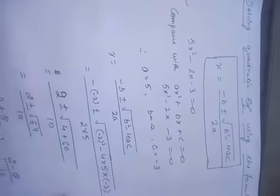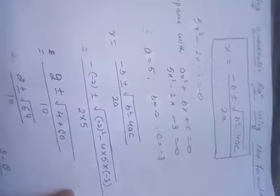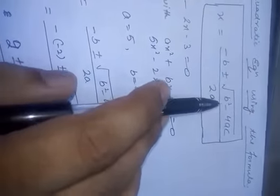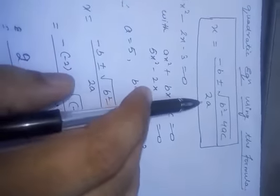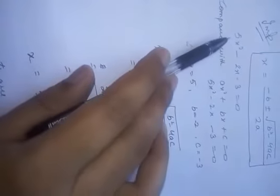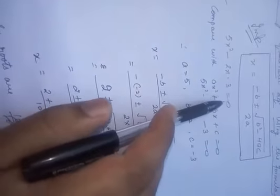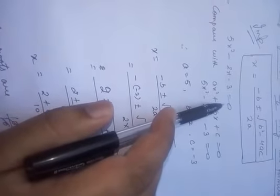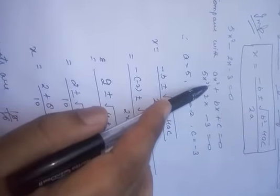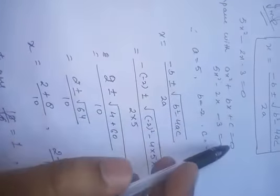The most important next topic in this chapter is solving the quadratic equation by the formula. The formula is: x = [-b ± √(b² - 4ac)] / 2a. This is the most important formula for the board exam. For example, the equation given is 5x² - 2x - 3 = 0. For such questions, compare the given equation with the standard quadratic equation ax² + bx + c = 0.